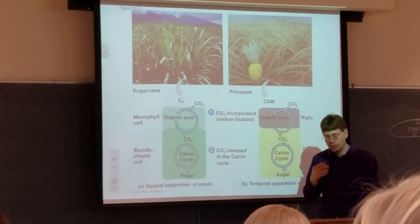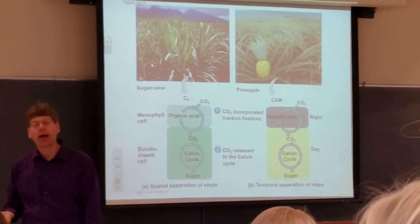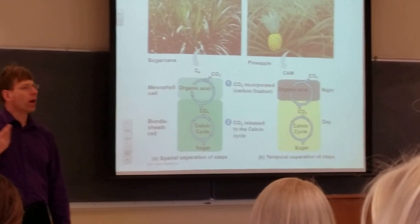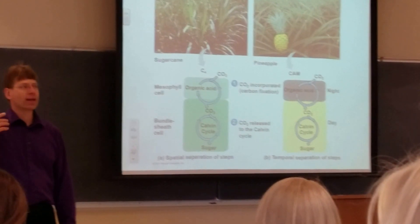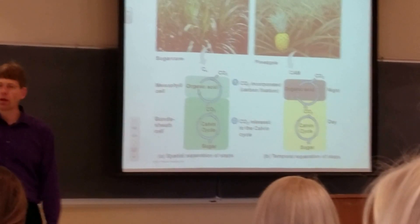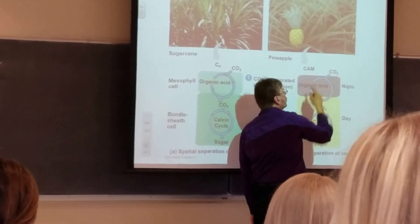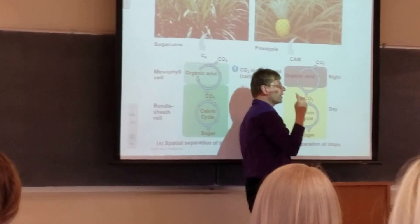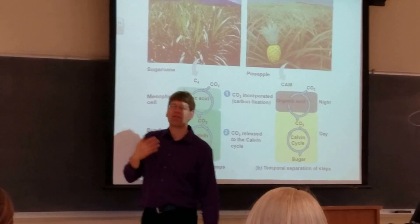At night, CAM plants open their stomata and close them during the day. They typically grow where water is limiting, so by opening at night when it's more humid and not as hot, they lose less water through the stomata. They open their stomata at night and fix CO2 using carboxylases into a 4-carbon compound — an organic acid — and then store those organic acids in a vacuole.